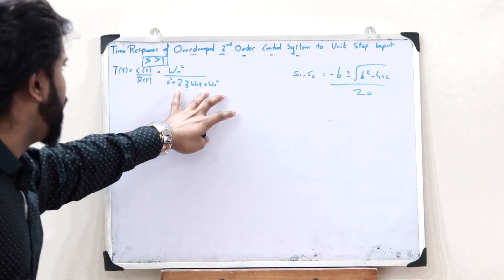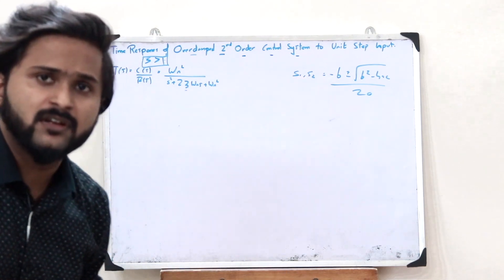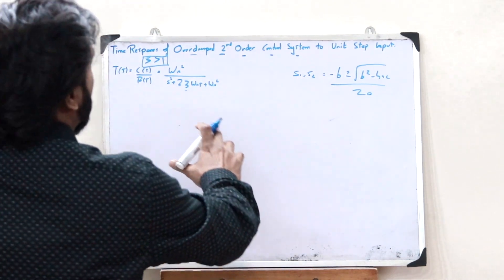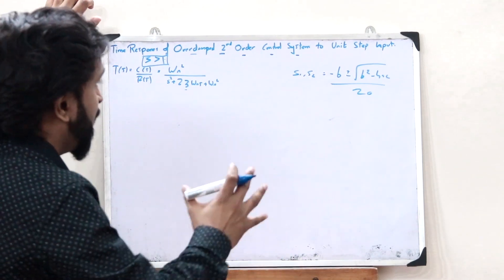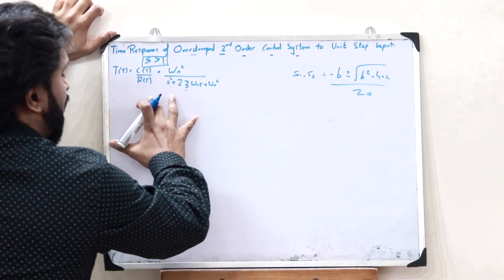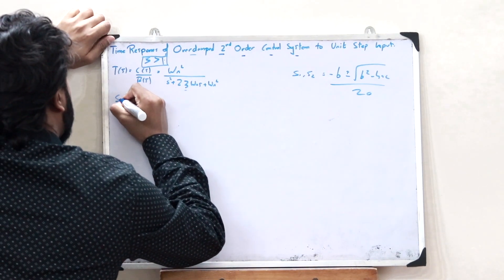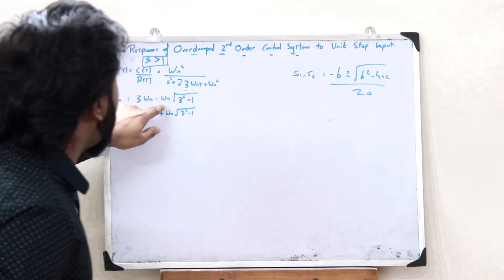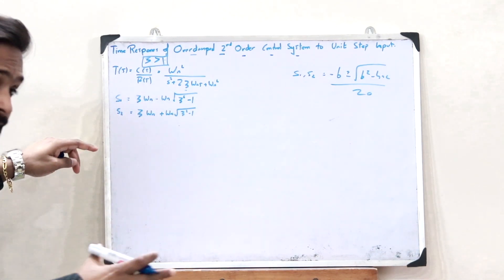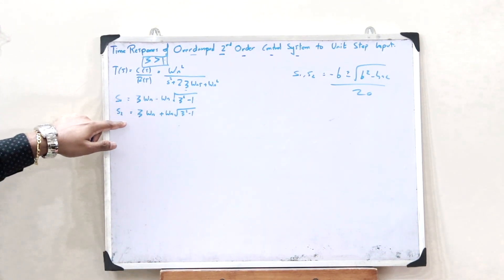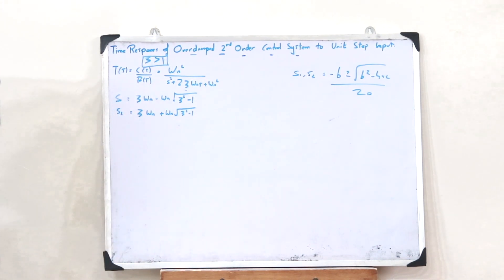By applying the coefficients of this particular quadratic equation into that formula, we get the roots: S1 = zeta omega_N minus omega_N times root of (zeta squared minus 1), and S2 = zeta omega_N plus omega_N times root of (zeta squared minus 1). These are the two roots of the quadratic equation.